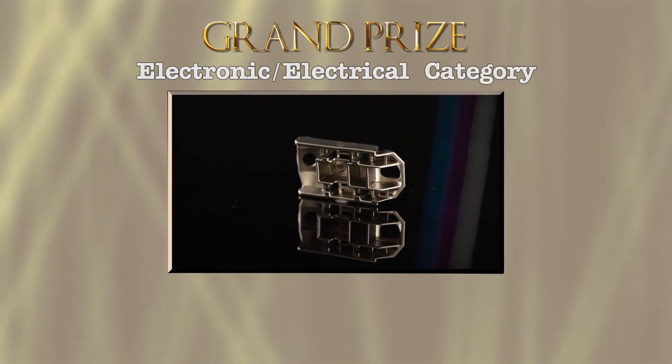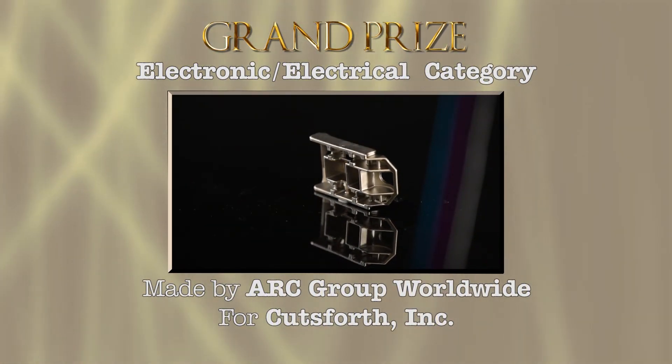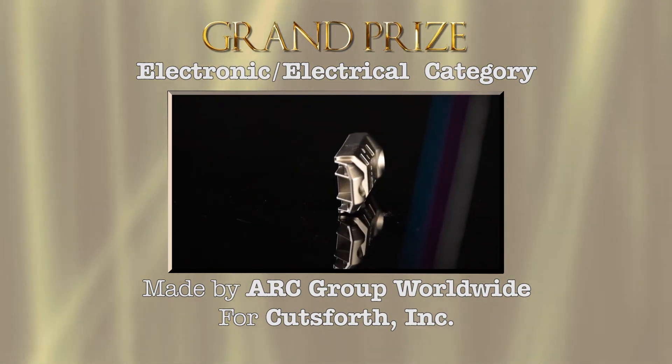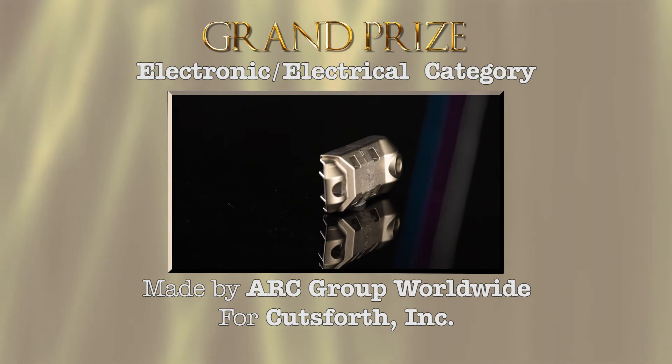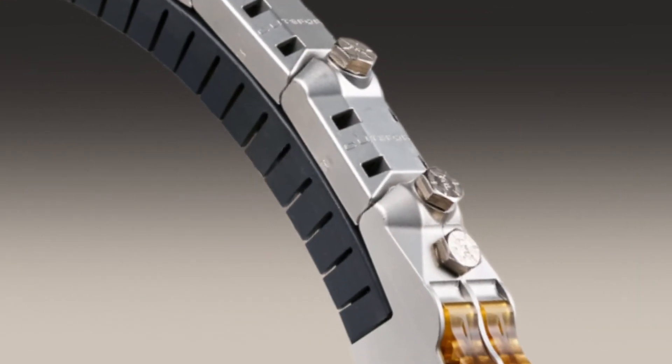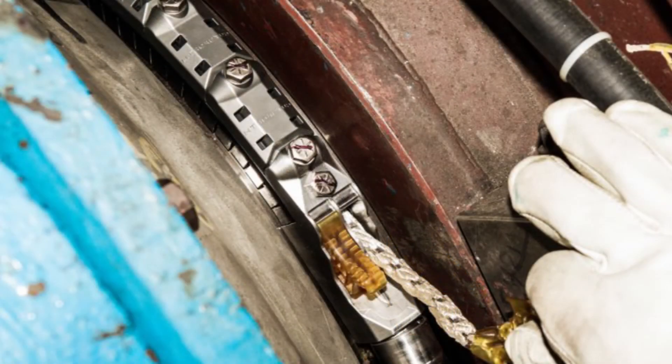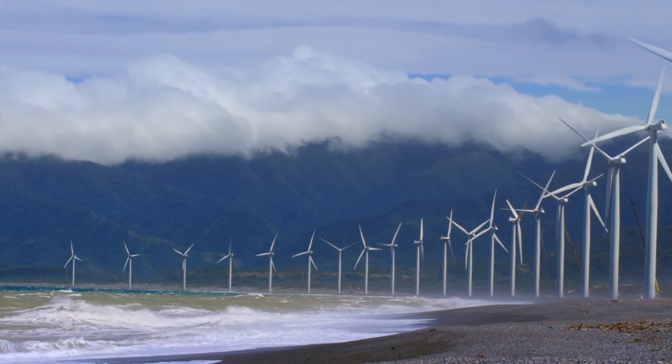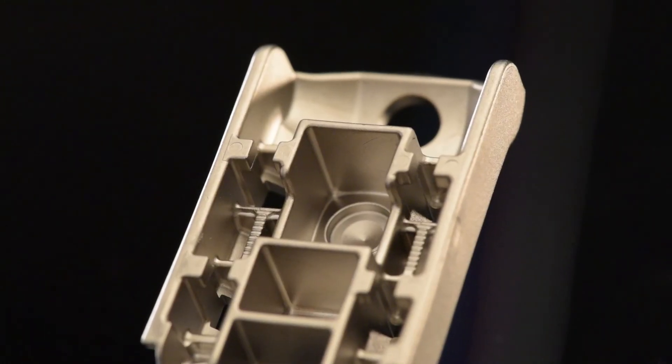The grand prize in the electronic electrical category goes to Arc Group Worldwide for a MIM 17-4 pH stainless steel shaft grounding guide section made for Cutsforth Incorporated. The guide section is part of the customer's shaft grounding system used in brush excitation maintenance on turbine generators in the nuclear, gas, coal, wind, and hydro industries.